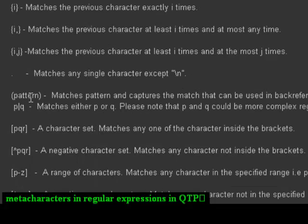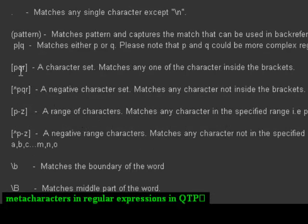Parentheses are used to capture matches and can be used in back references. If you want to match either of two characters, you can use the pipe symbol (|). If you want to match any character from a character set, you can use square brackets. If you want to match any character except those in a set (negative character set), you can use [^ ] syntax.